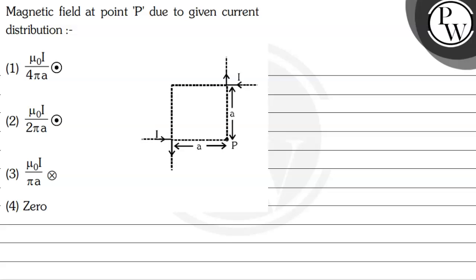Hello, let us read the question first. The magnetic field at point P due to the given current distribution is... out of the four options, choose one.